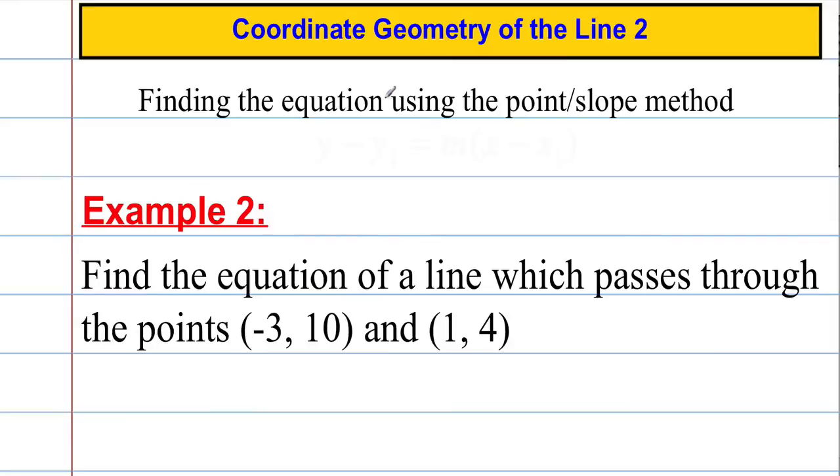Let's take a look at another question here. I need to find the equation using the point-slope method again. This time though, I'm given just two points. Now we're going to need another formula that you should have learned from the last video, and that's how to find m. So I need to find m, and that equals y₂ minus y₁ over x₂ minus x₁. So we need to find m, and then we're going to go straight for the formula.